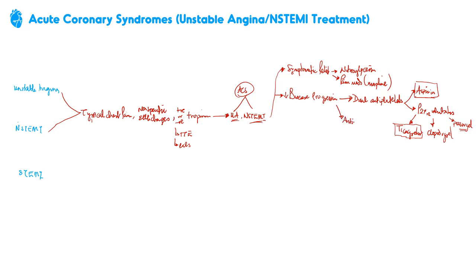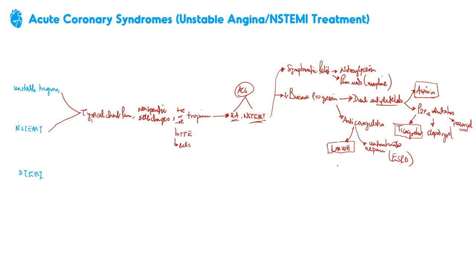Moving on to anticoagulation — for NSTEMI and unstable angina, our options are low molecular weight heparin or unfractionated heparin. If it is ACS you have to use one of them. Low molecular weight heparin is generally favored because it has a decreased risk of bleeding compared to unfractionated heparin. The only reason you might use unfractionated heparin would be in ESRD patients, but for most patients there are renally-adjusted doses of low molecular weight heparin that are sufficient.